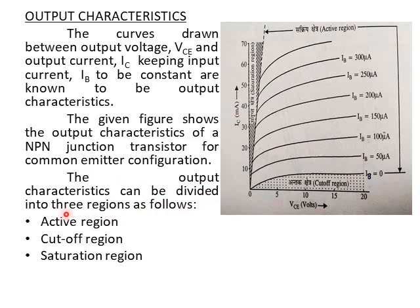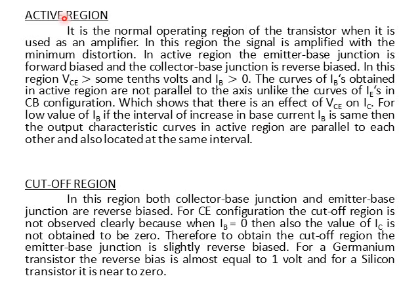The output characteristics can be divided into three regions: Active Region, Cut-off Region, and Saturation Region. Active Region is the normal operating region of the transistor when it is used as an amplifier — where an AC signal is given at input and an amplified AC signal is obtained at output. In this region, the signal is amplified with minimum distortion. In the Active Region, the Emitter-Base Junction is forward biased and the Collector-Base Junction is reverse biased.